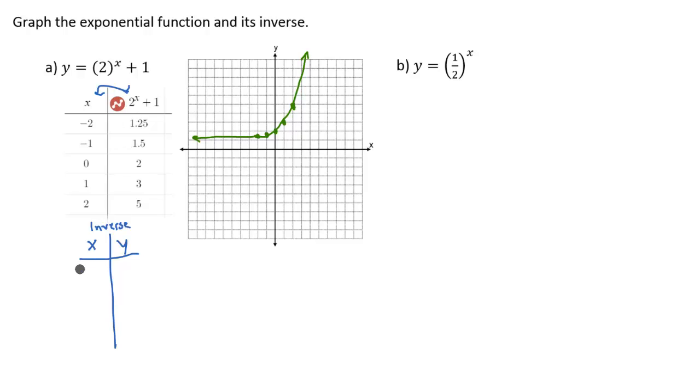So now I have 1.25 going to be right there, and then this is going to be negative 2. And then this is 1.5, and then this is going to be negative 1, and so forth.